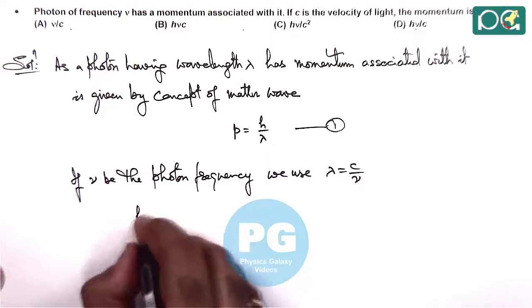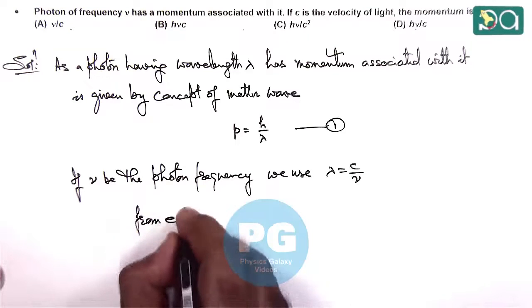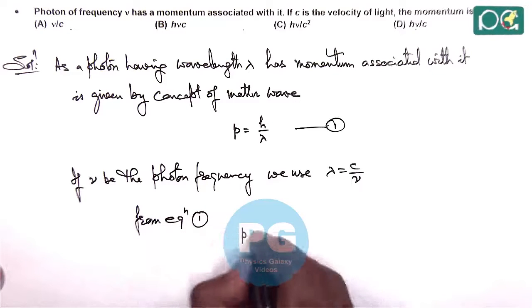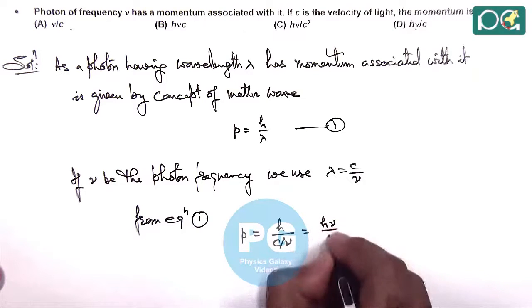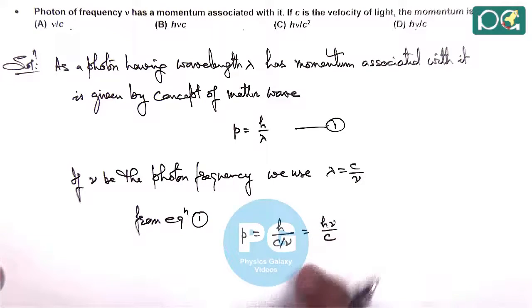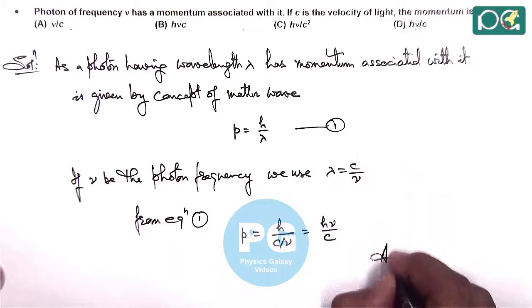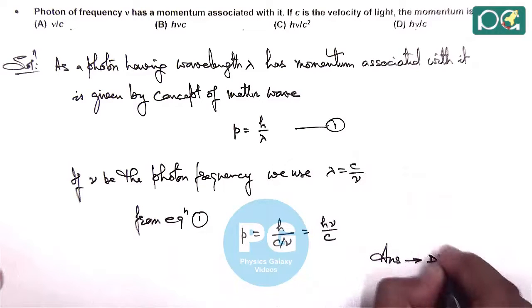So if this is equation one, we can write from equation one, momentum is given by h upon c by nu, which is h nu by c, which matches with option d. So the answer to this question is option d.